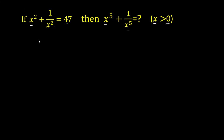In this question we have power of 2, meaning x raised to the power 2, and we need to build up to x raised to the power 5. If we multiply by x cubed, we'll get x raised to the power 5, because the base is the same and we add the powers.